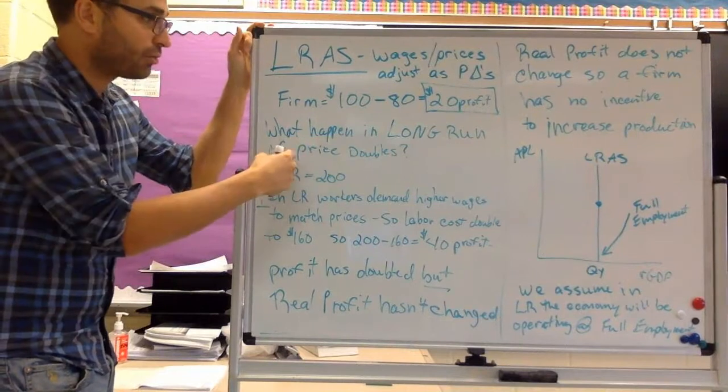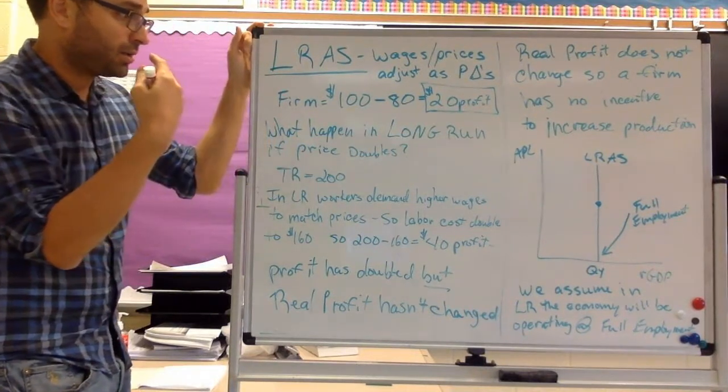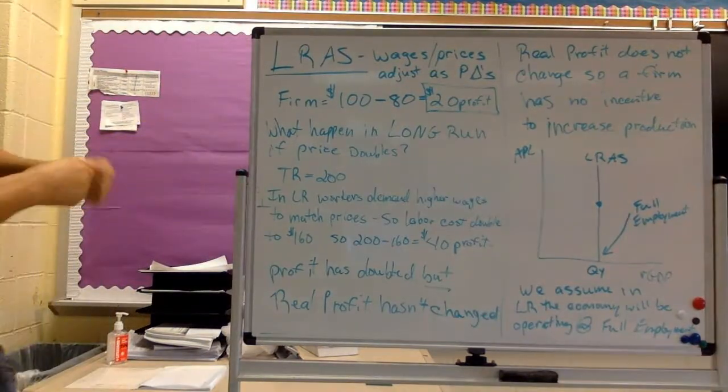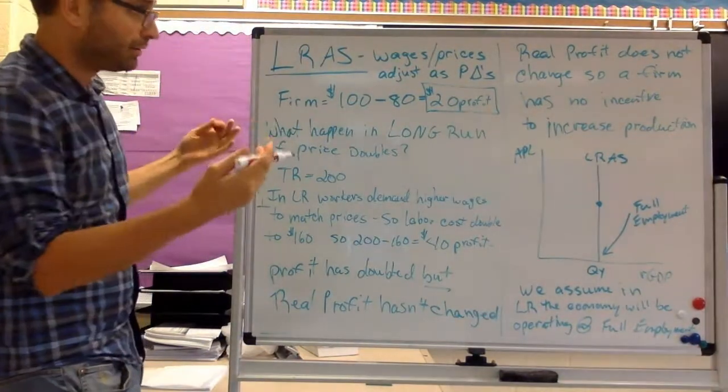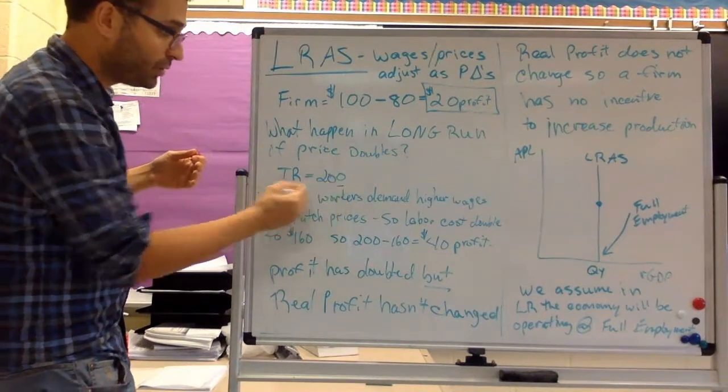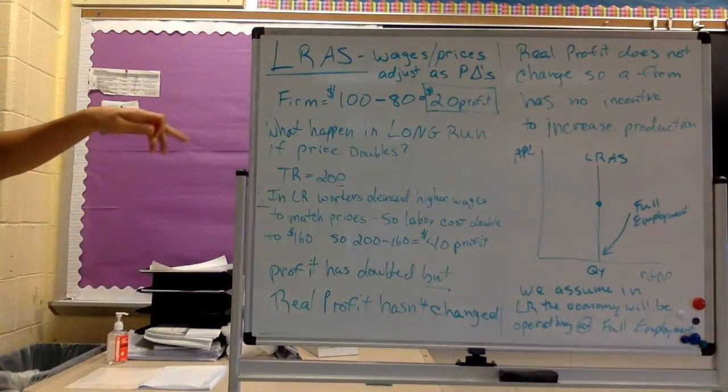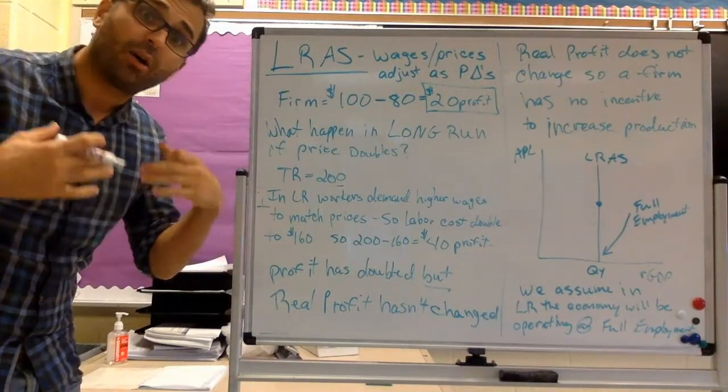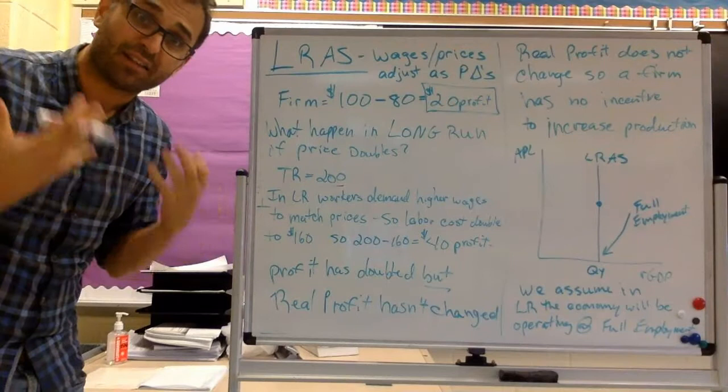So the same exact example, price doubles. So now the price of the good is now $2 times 100. So now total revenue is $200. However, what has changed? The labor costs are going to adjust. They're not stuck.